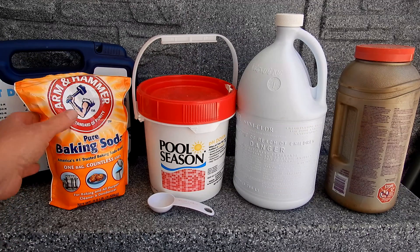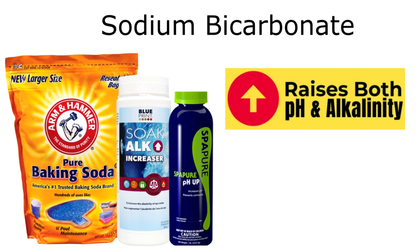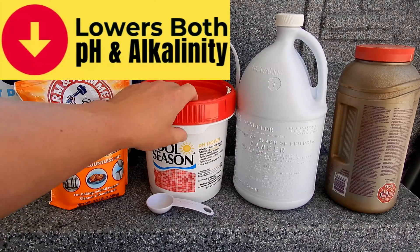Here are the basic chemicals you want to use for your above ground spa. You have baking soda — this will raise the pH and alkalinity if it gets too low. Baking soda is the same product you'd find in pool store products like alkalinity increaser or spa pure pH up. The main ingredient you're looking for is sodium bicarbonate, labeled differently by different manufacturers. Anything that says pH up or alkalinity up is typically sodium bicarbonate, and you can just use the baking soda found at your local store.